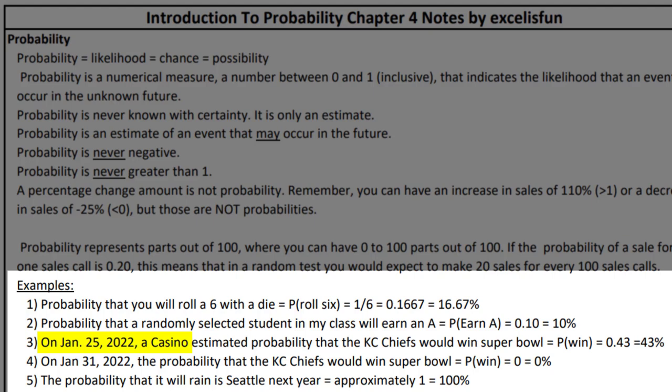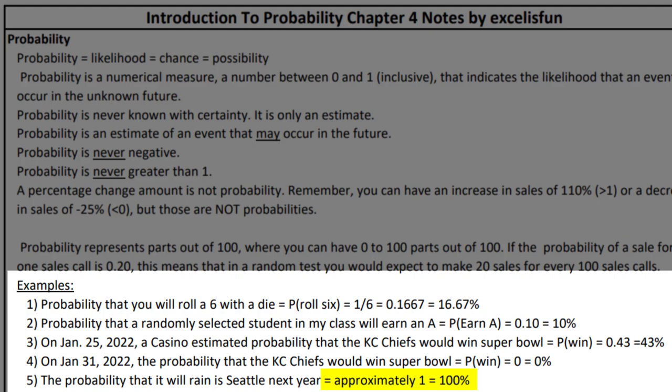On January 25, 2022, a casino estimated the probability that the Kansas City Chiefs would win the Super Bowl — 43% chance. But on January 31, a Monday, after KC lost the AFC Championship game, the probability became zero. There's zero chance they can win the Super Bowl. What's the probability that it will rain in Seattle next year? If you look at the last 100 years, every single year there's been rain — 100%.